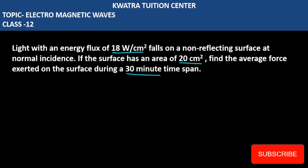Here we need to relate the information to find out how much force is exerted on the surface and how much energy is falling on the surface. First, the flux is 18 watt per centimeter squared. Second, the area is 20 centimeter squared. Third, the time span is 30 minutes, which is 30 into 60 seconds.